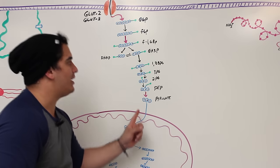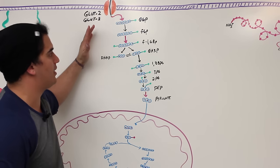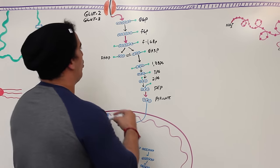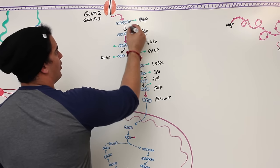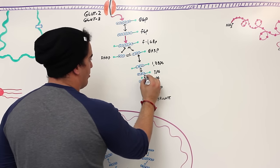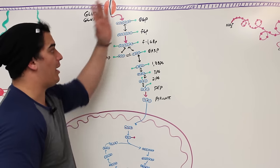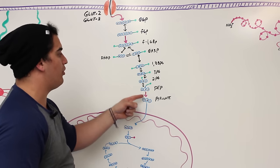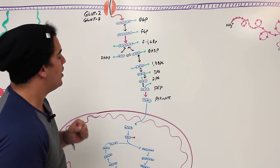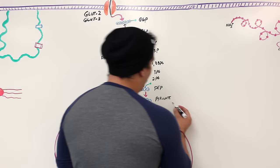Gluconeogenesis is essentially the reverse of glycolysis. Certain steps are reversible and can go right back up the pathway, but some are irreversible — and for those, you have to go around them. That's what we're going to explain. The first substrate we'll discuss is lactic acid.